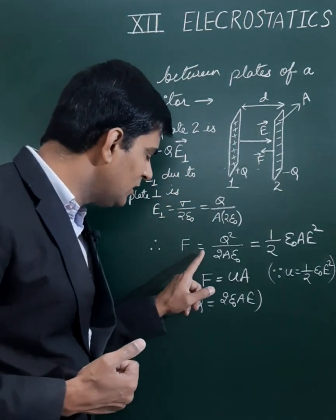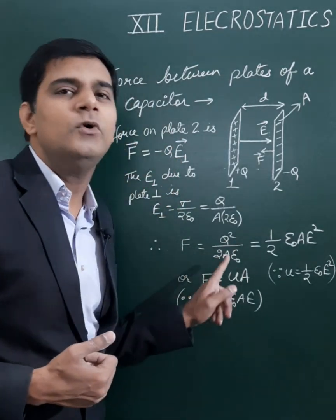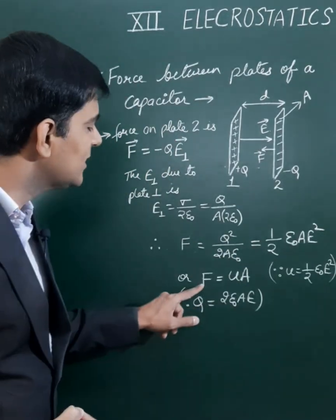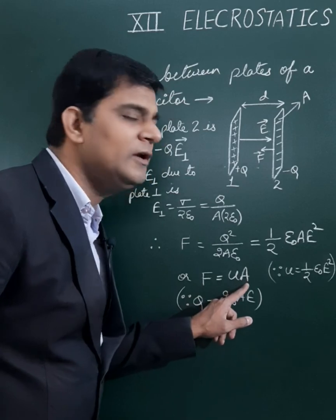Then the force expression comes out to be Q squared upon 2A epsilon naught, equals half epsilon naught A E squared. The force can also be written as small u into capital A.